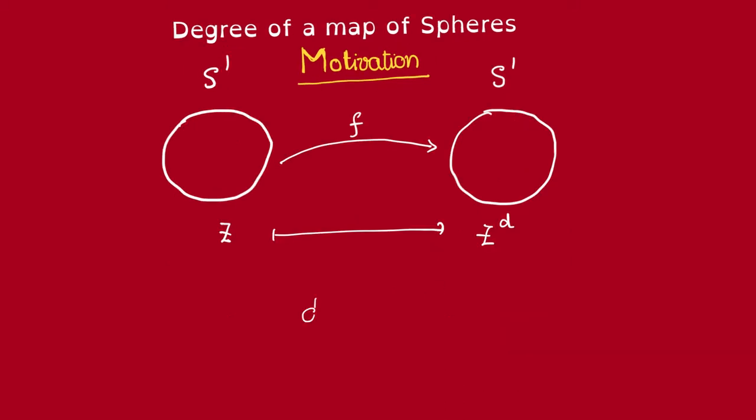Now, because f is a polynomial, we already have a notion of degree of f. That's just gonna be d. But that's an algebraic description. Now we want to see if we can recover this topologically.